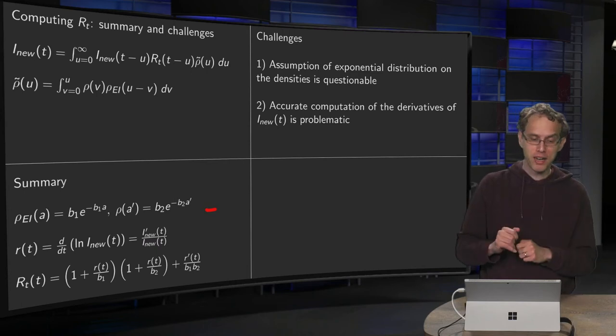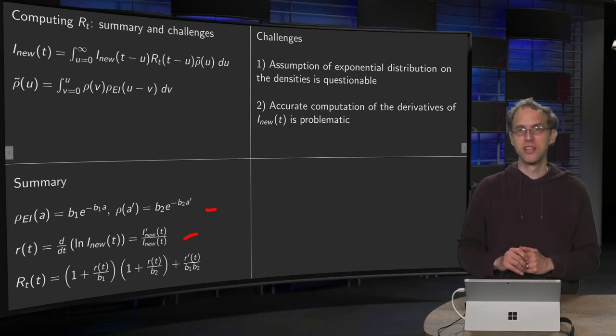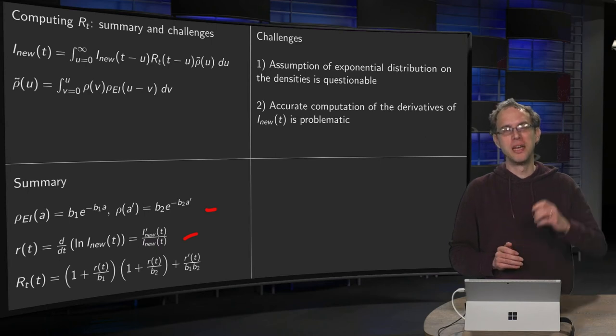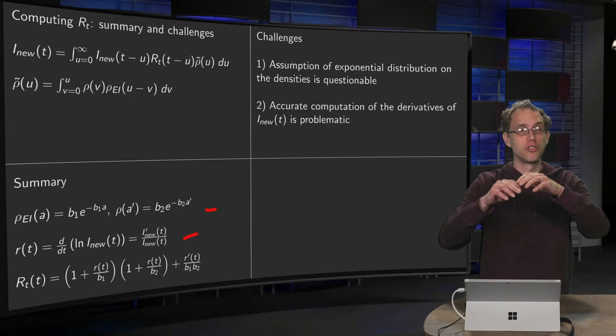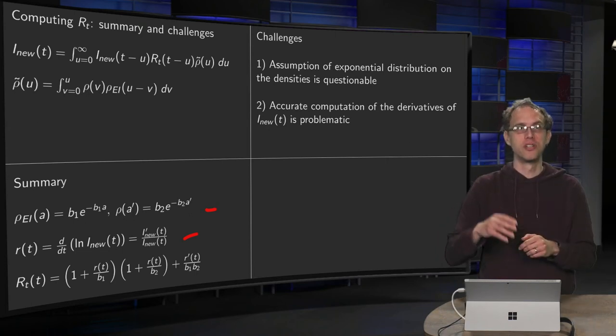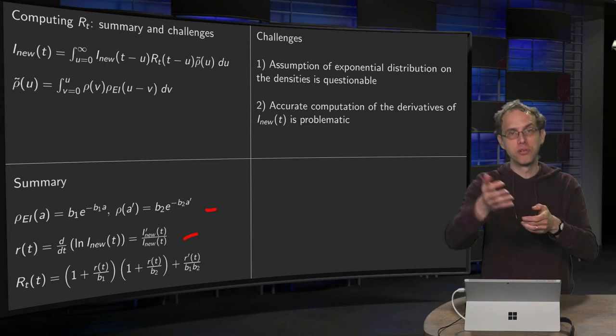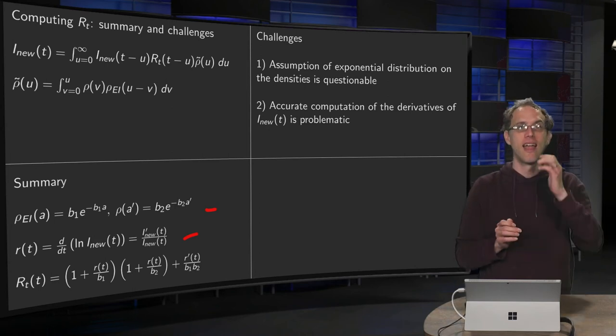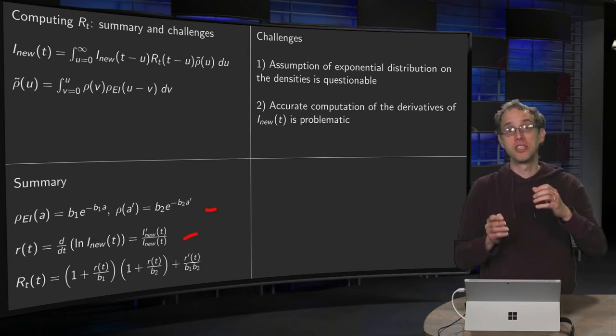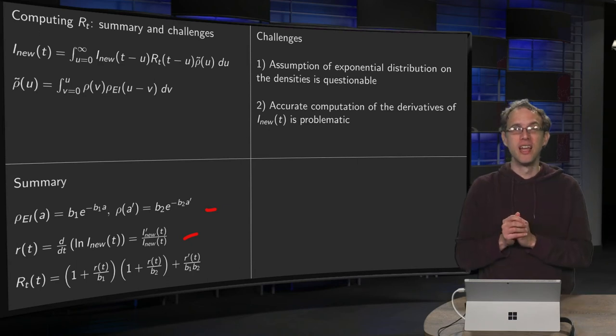A much bigger problem is over here in the computation of small r(t). If you have your I_new as a smooth solution of some modeling problem, so you have some set of differential equations, you compute your I_new of t, then you're fine because your I_new is nice and smooth. However,